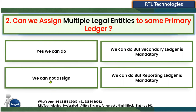The options are: yes we can; we cannot assign; we can but a secondary ledger is mandatory; or we can but a reporting ledger is mandatory. The correct answer is yes — we can assign multiple legal entities to the same primary ledger irrespective of whether a secondary ledger or reporting ledger is defined. Click next.